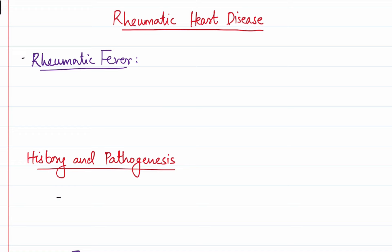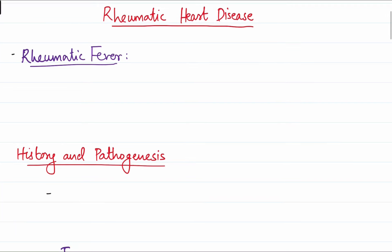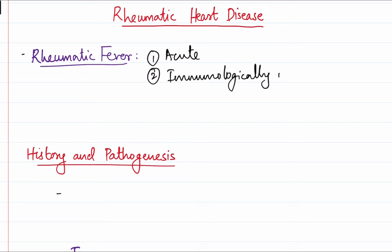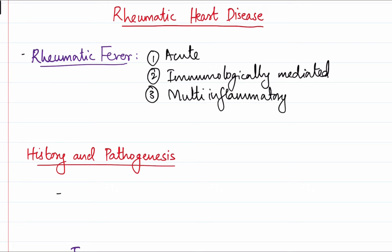Rheumatic fever is an acute, immunologically mediated, multi-system inflammatory disease. So firstly, it is an acute disease and it is immunologically mediated — the mechanism is an immunological reaction. It involves several systems: the cardiac system, the CNS (neurological system), and the joints. So it's a multi-system inflammatory disease.